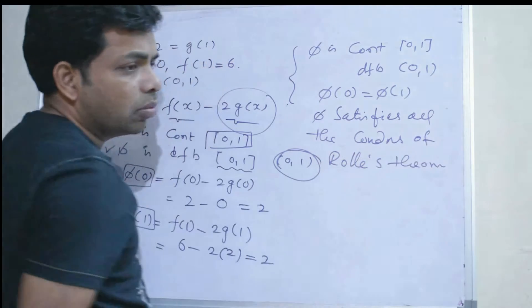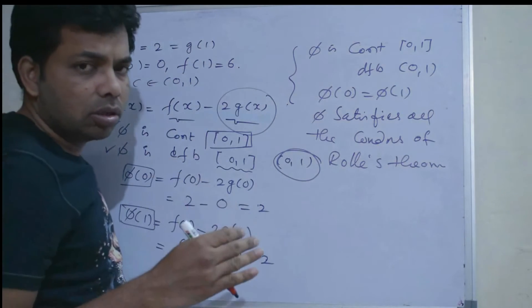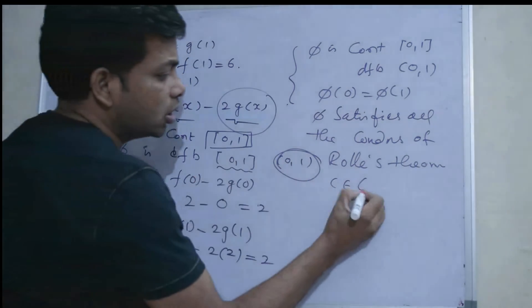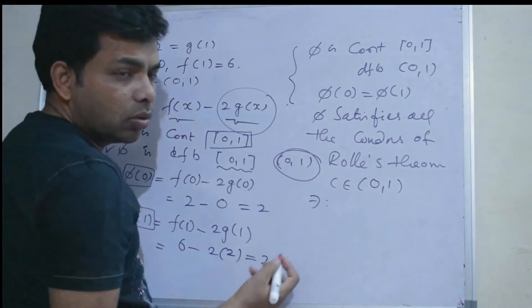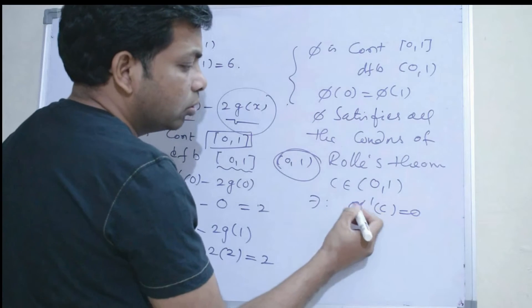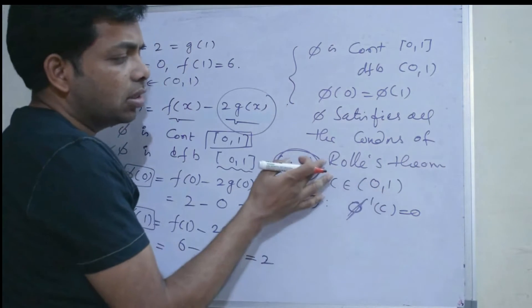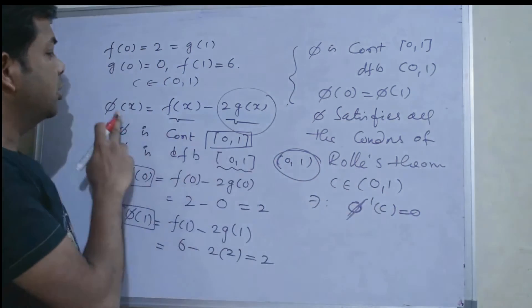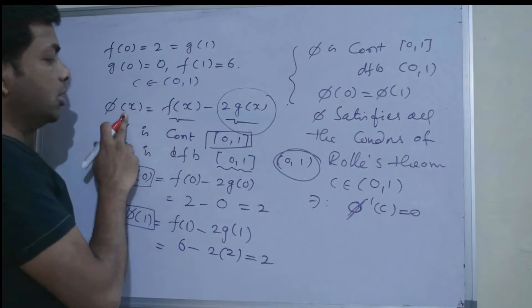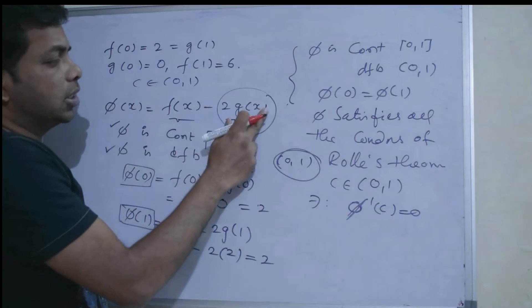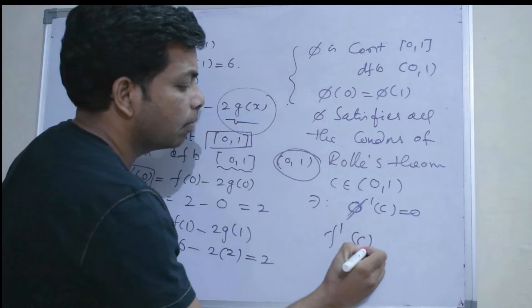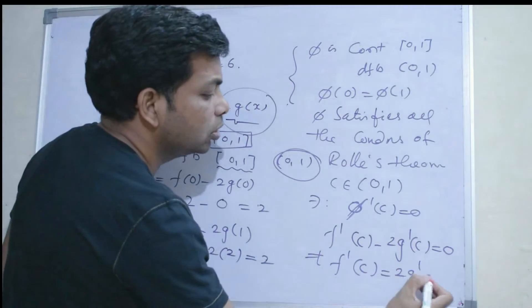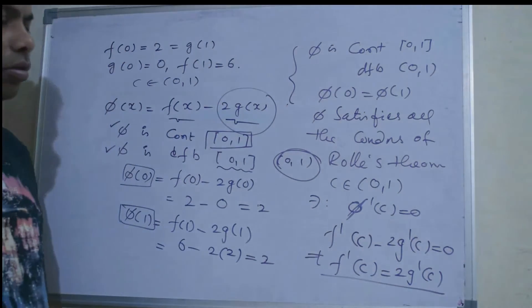Therefore, according to Rolle's theorem, there exists c in open interval (0, 1) such that the derivative equals 0. Now φ'(x) = f'(x) - 2g'(x). Substituting x = c: f'(c) - 2g'(c) = 0, which implies f'(c) = 2g'(c). So f'(c) = 2g'(c) is the correct option.